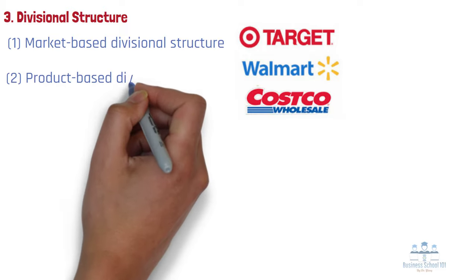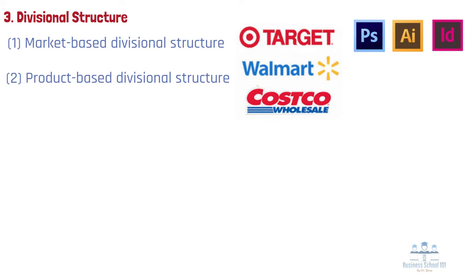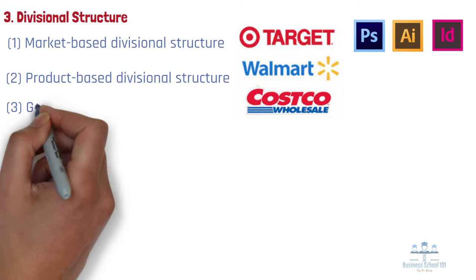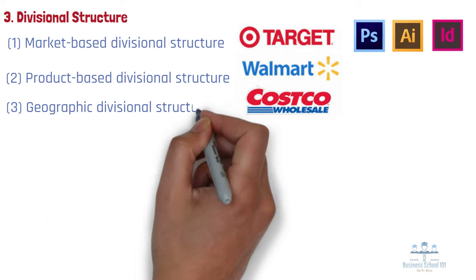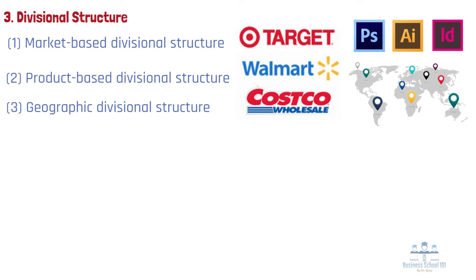Number 2: Product-based divisional structure. Divisions are separated by product line. For example, a tech company might have a division dedicated to its cloud offerings, while the rest of the divisions focus on different software offerings, such as Adobe and its creative suite of Illustrator, Photoshop, InDesign, etc. Number 3: Geographic divisional structure. Divisions are separated by region, territories, or districts, offering more effective localization and logistics. Companies might establish satellite offices across the country or the globe to stay close to their customers. This structure can be found in many large multinational companies.